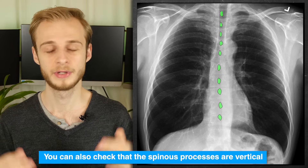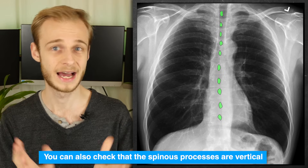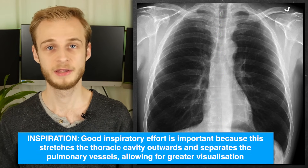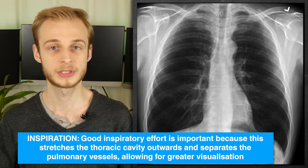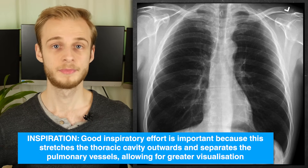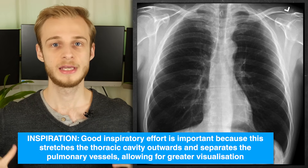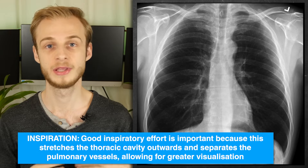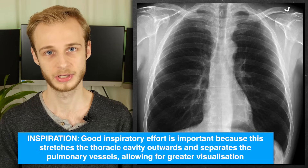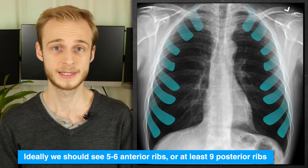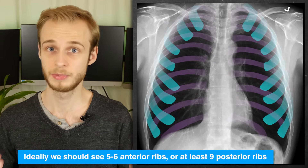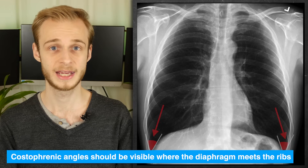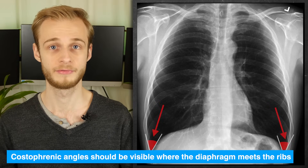In this case it's not perfect, but you are looking for something grossly abnormal to know that something is wrong. I is for inspiration — how well did the patient breathe in when they were asked to? When we inspire, this stretches the thoracic cavity outwards, which separates all the vessels and soft tissues we might want to look at. On an ideal x-ray we should see at least five to six anterior ribs or nine posterior ribs, the lateral edges of each rib, and the costophrenic angle where the diaphragm meets the ribs at the bottom.